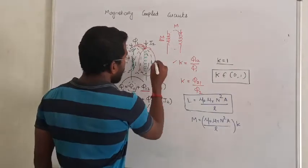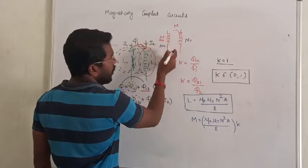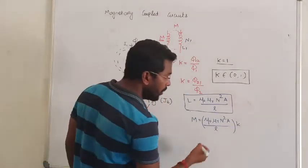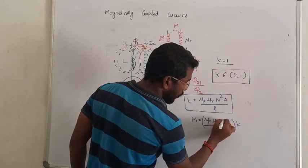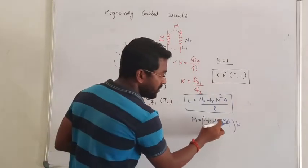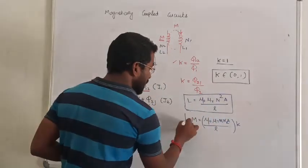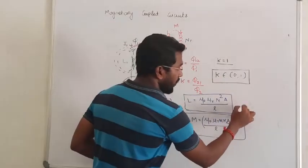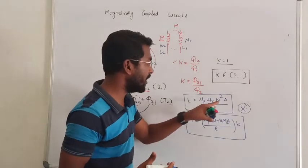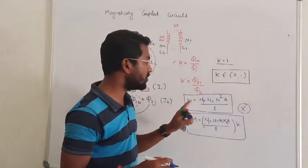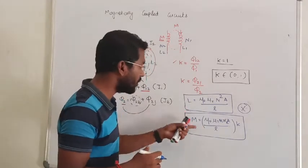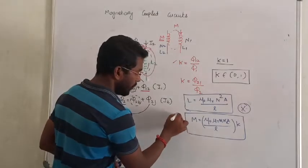When you have N1 and N2 turns for the two coils, the general formula gives you both the self inductance and mutual inductance. Do not forget these formulas — you can expect direct questions asking you to find the self inductance and mutual inductance. Directly use these formulas to obtain the answers.